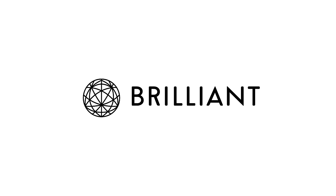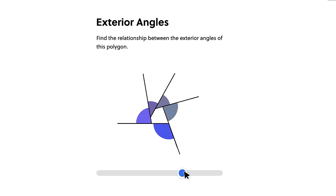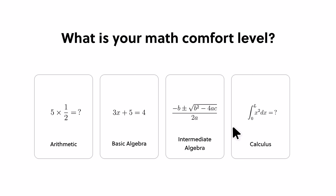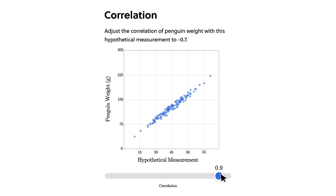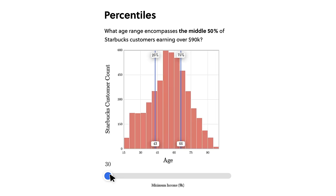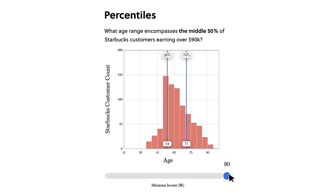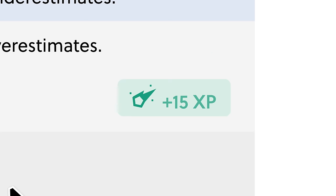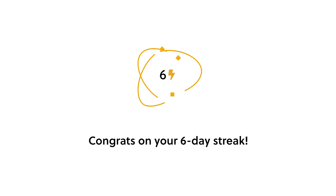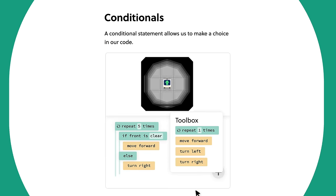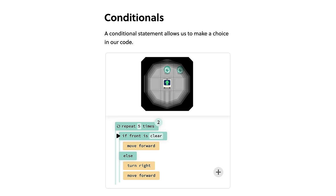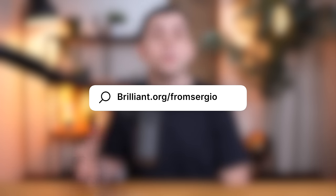And while we're on the topic of shortcuts, a great shortcut to learning every day is by using today's sponsor, Brilliant.org. Brilliant is an online interactive learning platform where you learn by doing, with thousands of interactive lessons in math, data analysis, programming, and AI. Their lessons focus on hands-on problem solving, which has been proven to be 6 times more effective than simply watching lecture videos. If you like building these shortcuts, you're also going to like Brilliant's programming courses like Thinking in Code, where you'll get familiar with Python and essential coding elements. Visit brilliant.org/fromSergio for a free 30-day trial and 20% off an annual premium subscription.